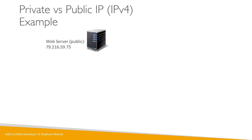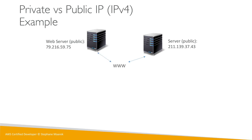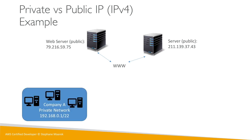For example, if you have a web server that's public — like an EC2 instance — it will have a public IP. Another server will have another public IP, and using those public IPs these servers can talk to one another, which is great.